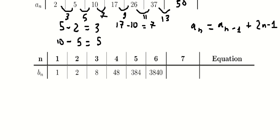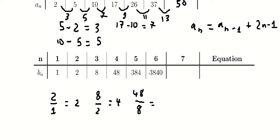For the second one, we see that number 2 divided by number 1, we have number 2. Number 8 divided by number 2, we have number 4. 48 divided by number 8, we have number 6. So the next ones are number 8, number 10, and then number 12. That means we use this number multiplied by this one.